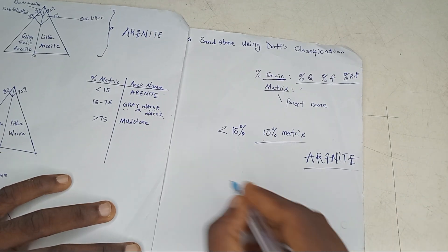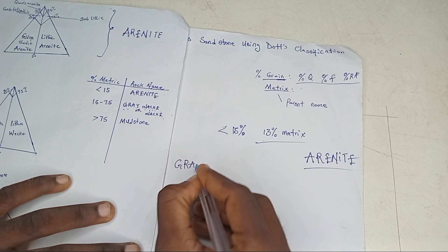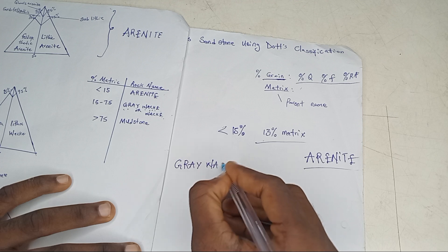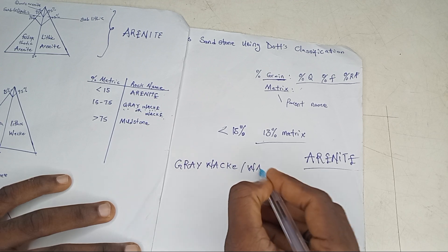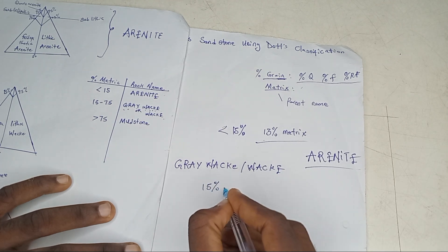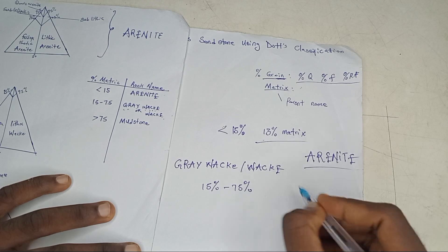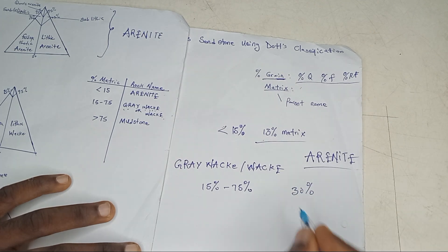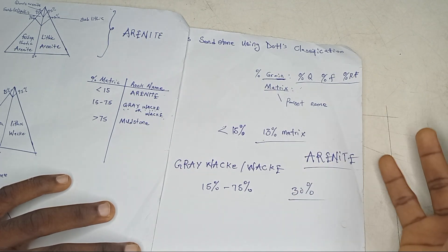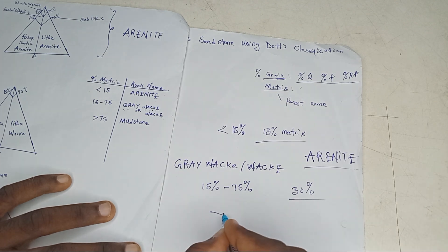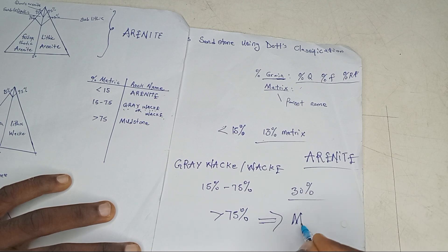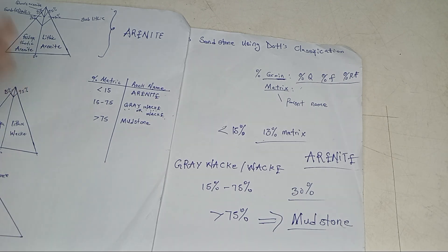What are the other rock names? We have the graywacke. The parent's name is graywacke or wacke when the matrix is from 15% to 75%. So if you are given a question saying it has a matrix of 30%, that must be a graywacke sandstone. And anytime you see greater than 75%, the parent's name is mudstone — it's just purely mudstone.